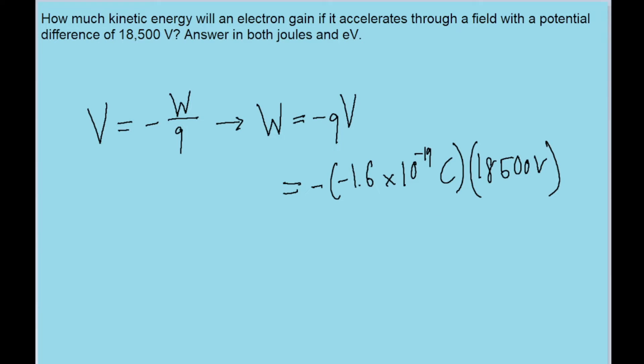If we put this into our calculator, then we find a work done of about 2.96 times 10 to the power of negative 15. And this is in joules. So this is how much work done on the particle, which also means that this is how much kinetic energy that it gains.